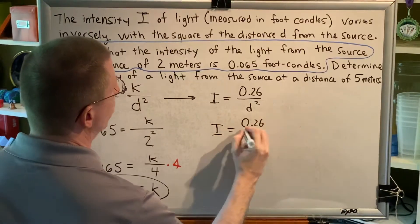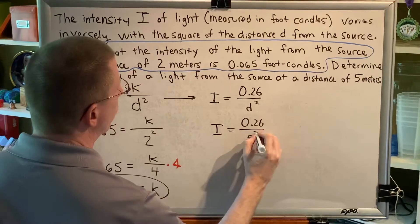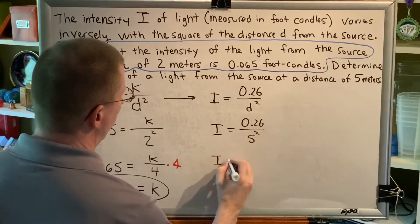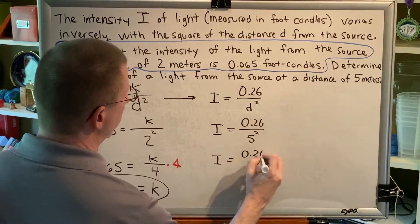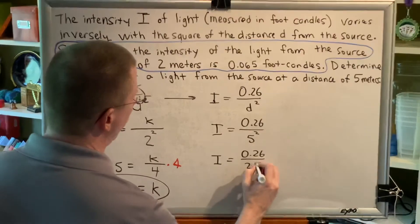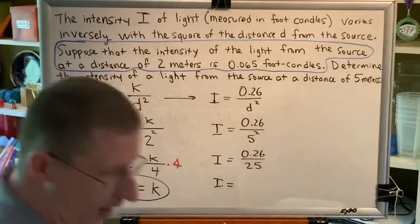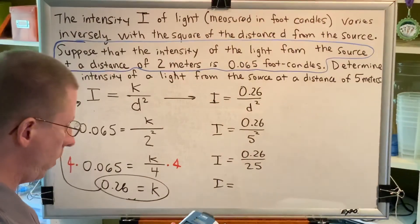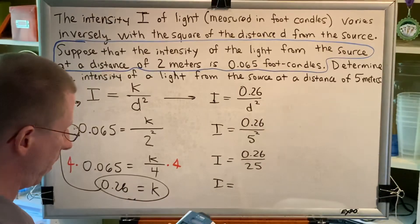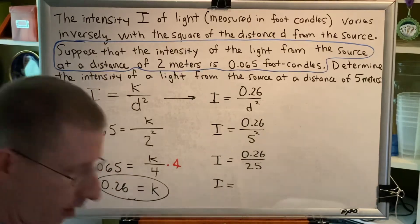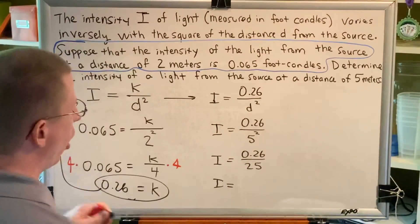So, let's plug in. We get 0.26 over 5 squared, which is 0.26 divided by 25. Once again, I'll use my calculator. 0.26 divided by 25 - 0.0104.